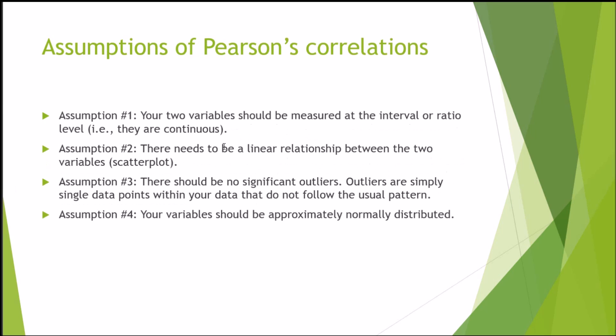There are some assumptions that need to be met when calculating a Pearson's correlation. First, your two variables should be measured at an interval or ratio level, i.e., they are continuous. Second, there needs to be a linear relationship between these two variables, and this can generally be done by illustrating a scatterplot.